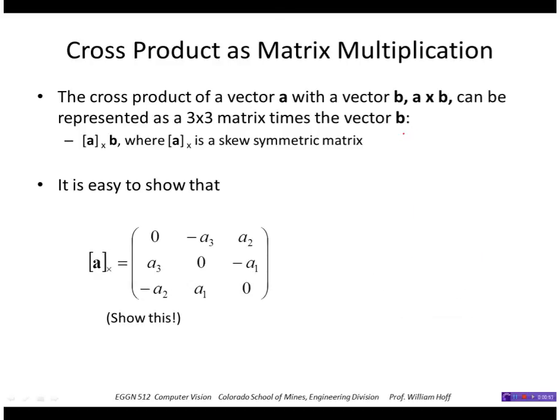If I write A as A1, A2, A3, and B as B1, B2, B3, then A cross B is, I can calculate that as the determinant of this 3 by 3 matrix written like this.